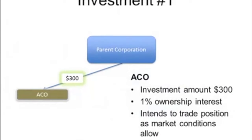The first investment PECO made was a $300,000 investment in AECO. This represented 1% of the issued and outstanding shares of AECO. Bob sees this investment as a trading position and hopes to sell it for a profit in the near future.